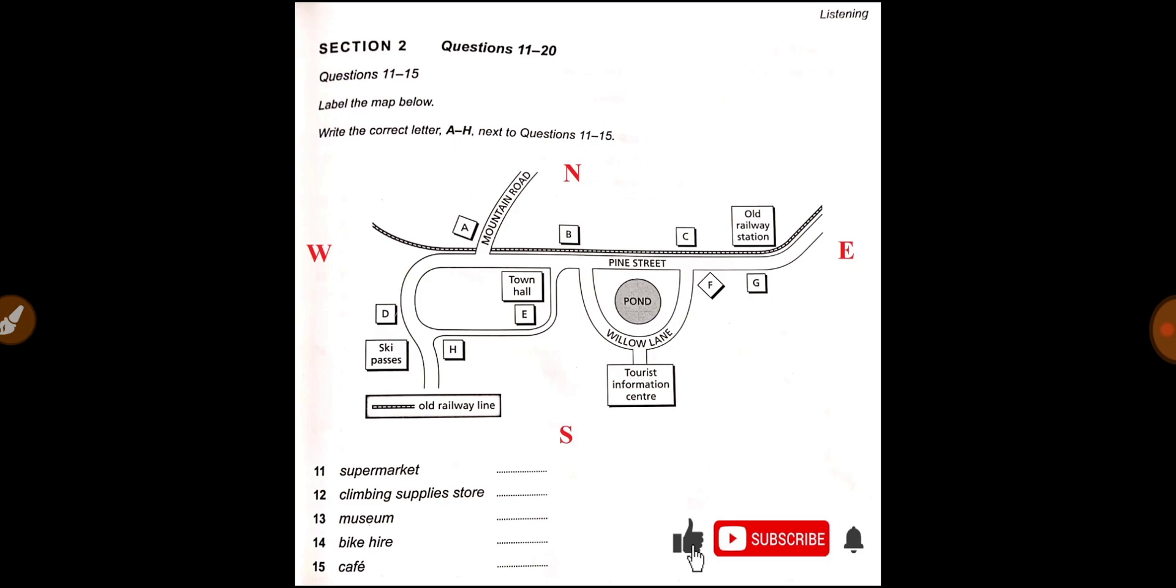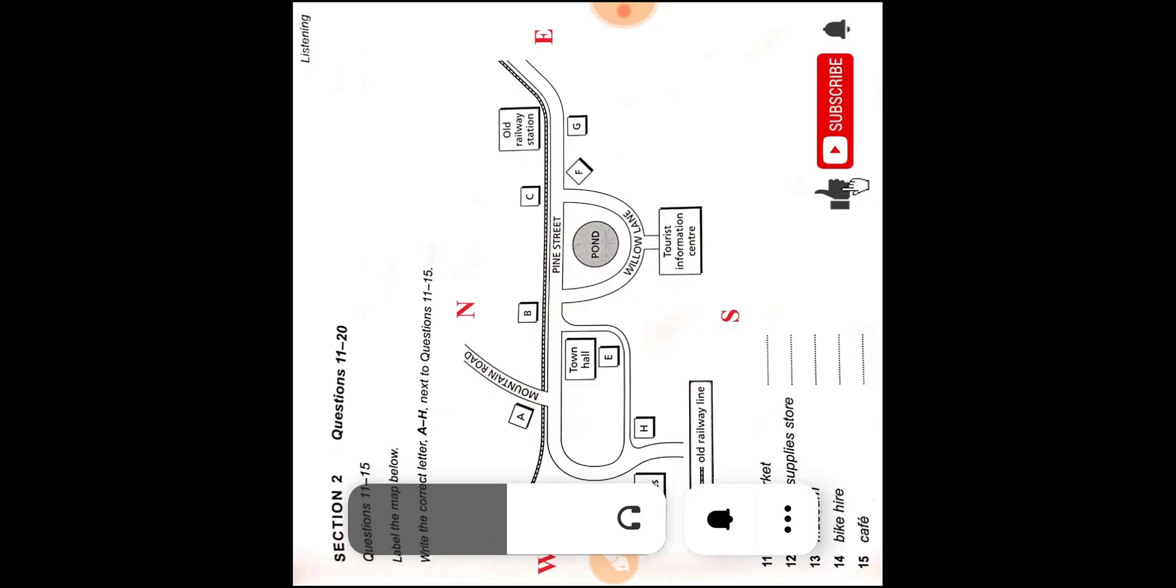So first of all you have to see which information is given - railway line, tourist place center, ponds, streets, these are all given. So we will find out how to use this, how to find out the answer. So let's check out.